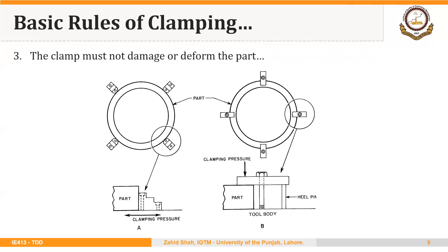Here is another example. This is a blank — a thin circular piece. If we apply clamping force from the side as shown, the part could be damaged. It is preferable to hold the part from above — from the top surface — instead of from the side. So holding from above is the preferred method, and in this case we use a strap clamp, which we will discuss in a following segment.